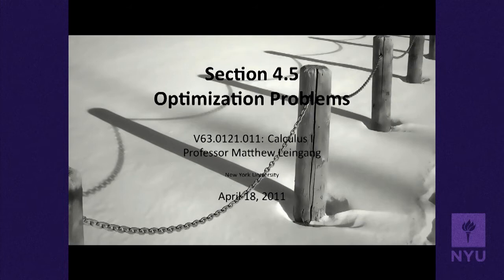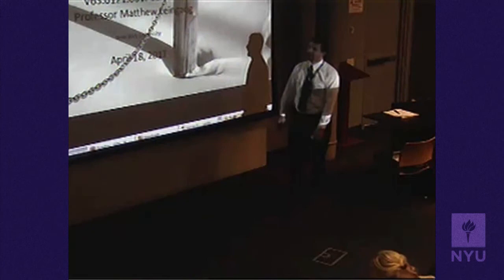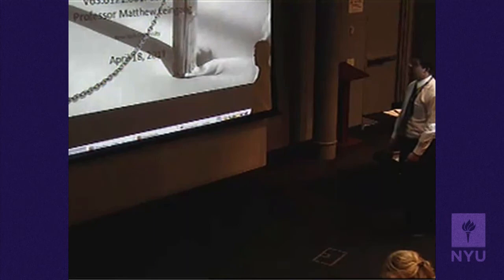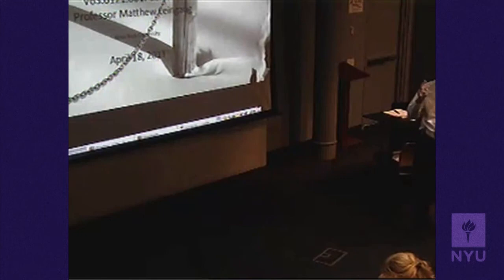We're going to do today section 4.5, which is one of my favorite subjects in the course, talking about optimization problems. We headed off this chapter by talking about why it's important to find maximum or minimum values of a function, and then we went off into a general abstract method for doing that. But we're also interested, for practical reasons, finding maximum and minimum values of functions, and that's what this section is about: applying those max-min techniques to real-world problems.